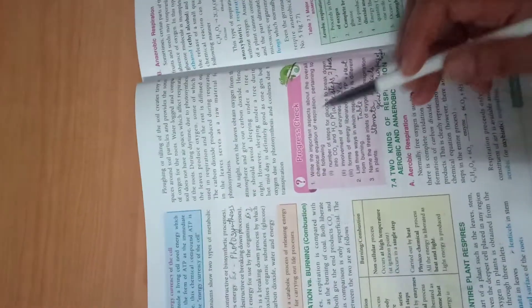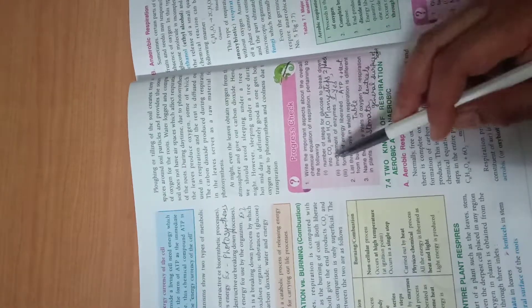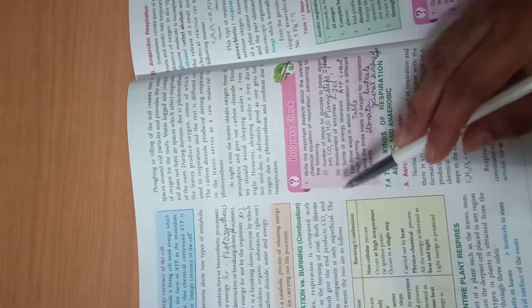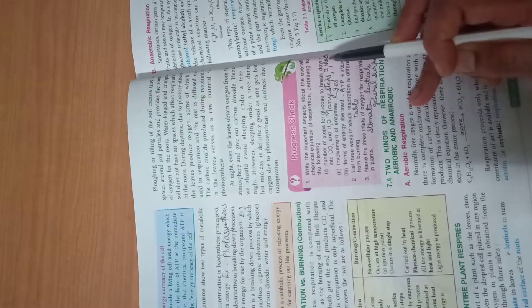Now important aspects: overall chemical equation of respiration. Number of steps for glucose to break down into carbon dioxide and water: many steps are there, but in chemical equation they have shown only one step. Many steps in general and two phases: glycolysis and Krebs cycle.